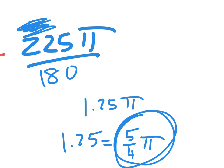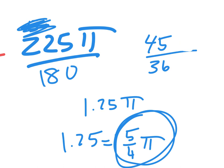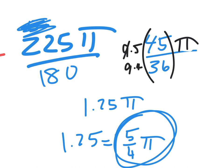Now, if I wanted to do it the other way — 225 and see how many times five went in there — it was 45 times five over 180 is 36. But do you get that reduces again? To a nine times five and a nine times four — look at those cancel: five-fourths pi, five pi over four.